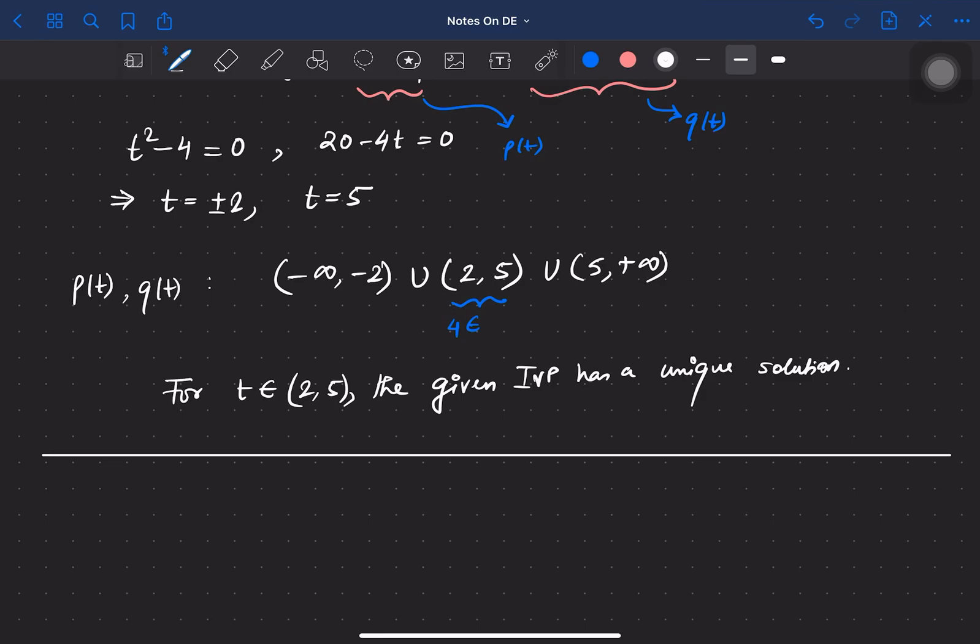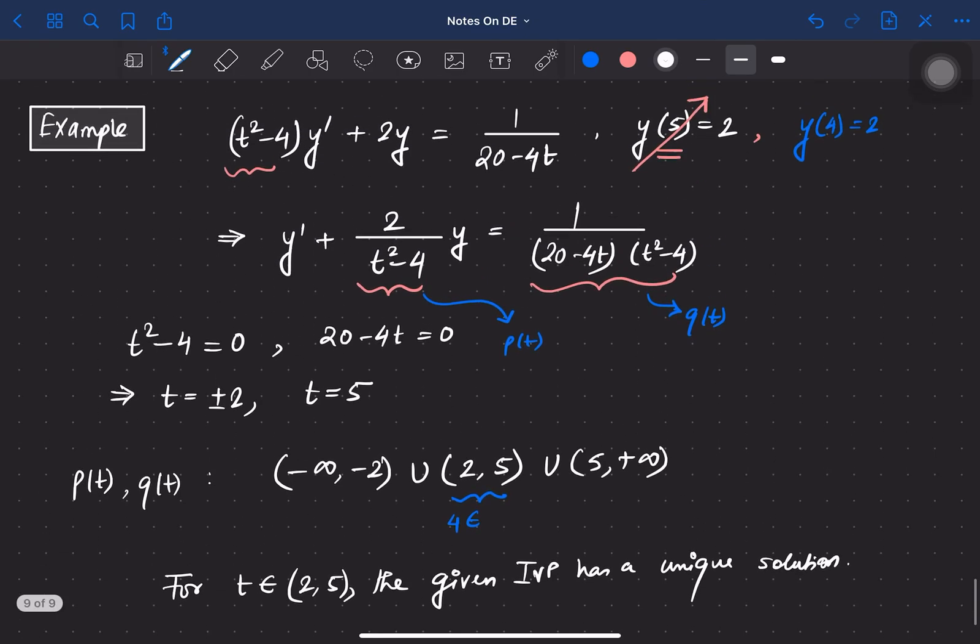I deliberately took that initial condition at t = 5 to show you that it will not help us determine the uniqueness of the solution. We don't need to know whether we can solve this differential equation or not. For this problem, we just need the existence of the solution in a particular interval.